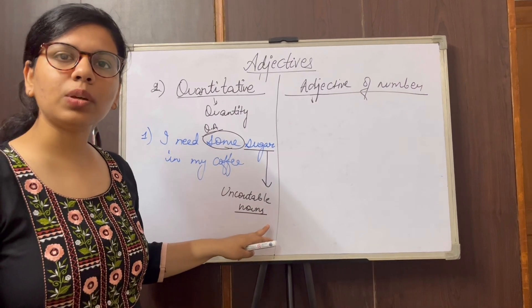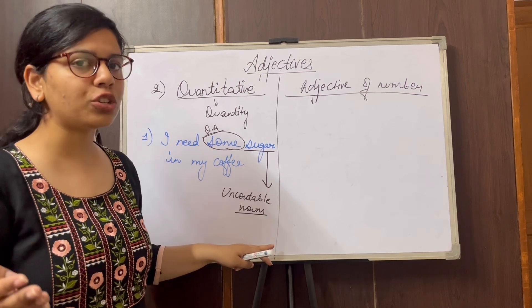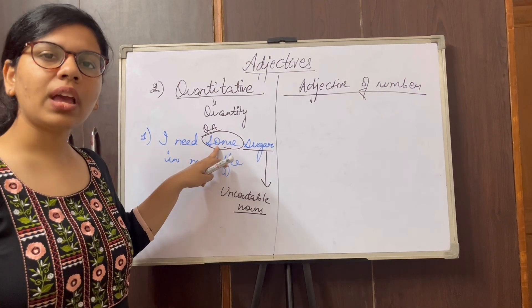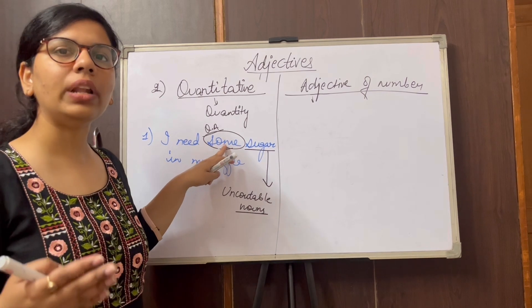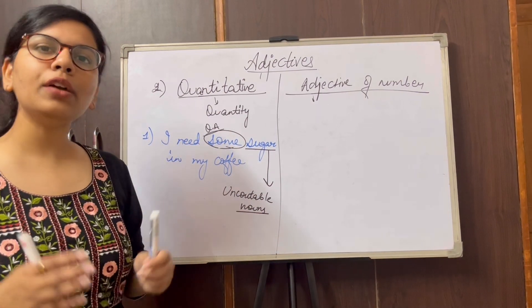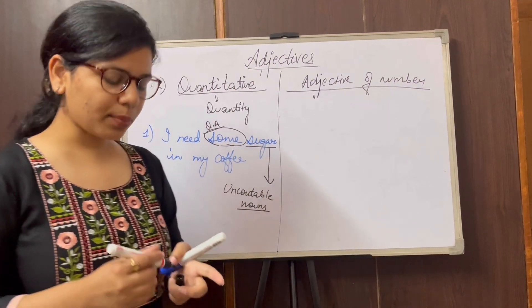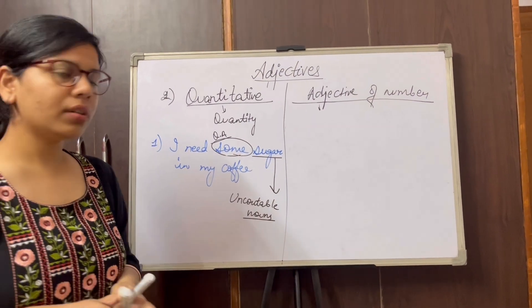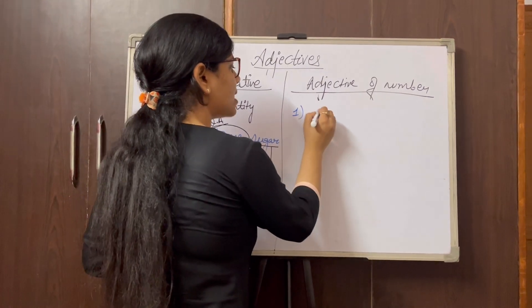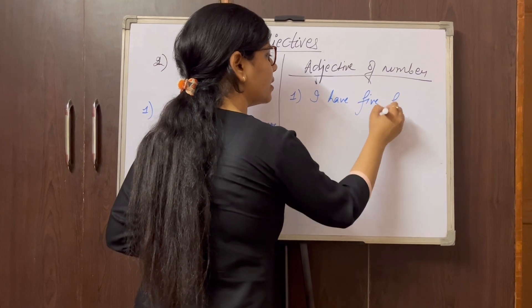We are not counting sugar as it is; we count it in the form of cubes, or measure it — like one kg of sugar. We cannot say 'sugars' or 'one sugar, two sugar.' So this is an uncountable noun. Similarly we have water, rice, milk, etc. Whenever we use adjectives like 'some,' 'few,' or 'little' with them, they become examples of quantitative adjectives. Now let's come to adjective of number — for example: I have five friends.